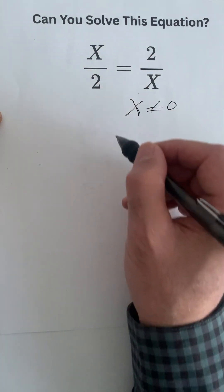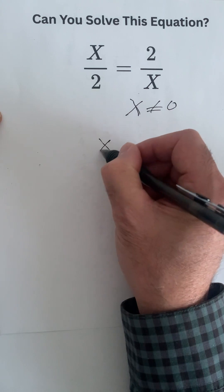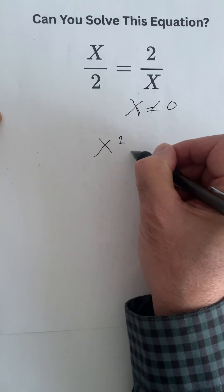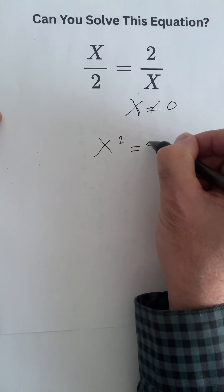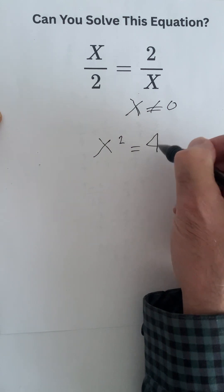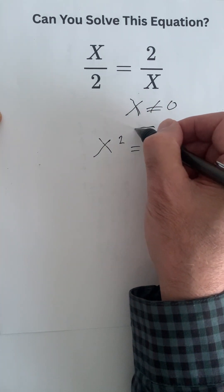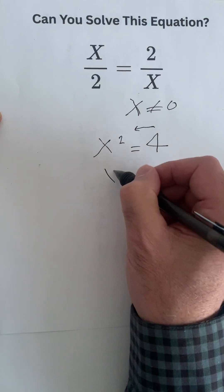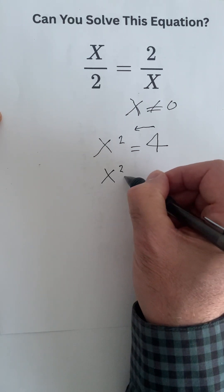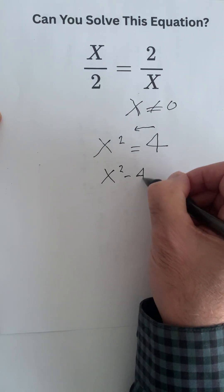Now if that's the case, then we do the cross product and we get x squared equals 4. Now we can solve this equation. We can take the 4 on the other side, on the left side, and write x squared minus 4 equals 0.